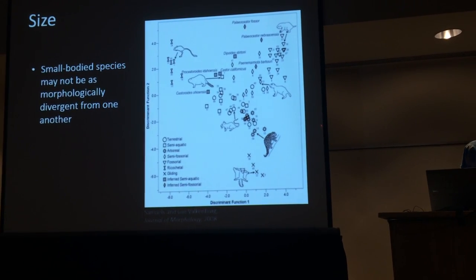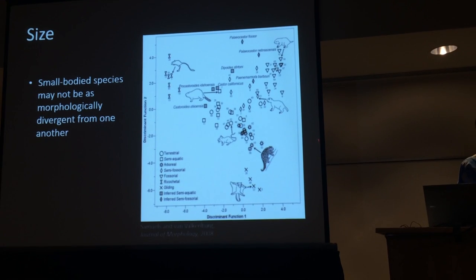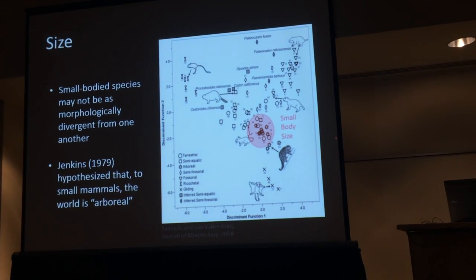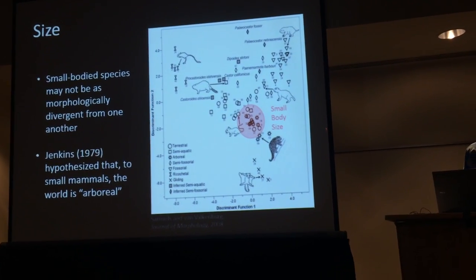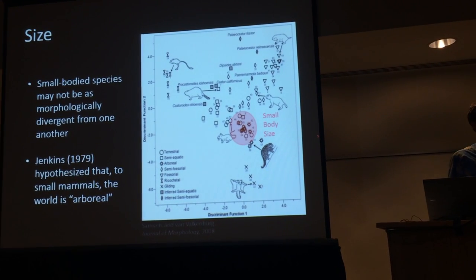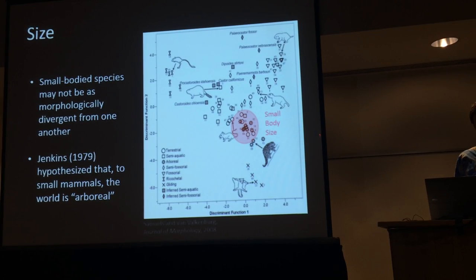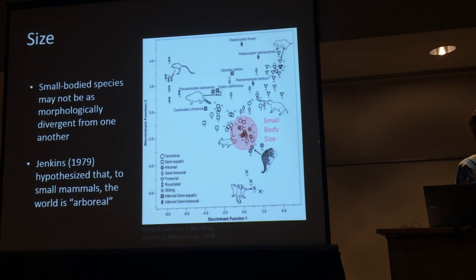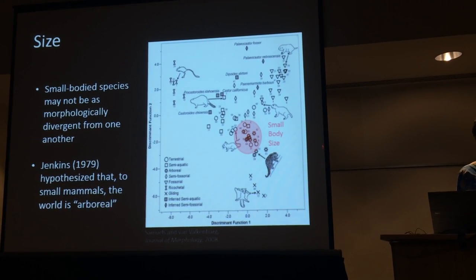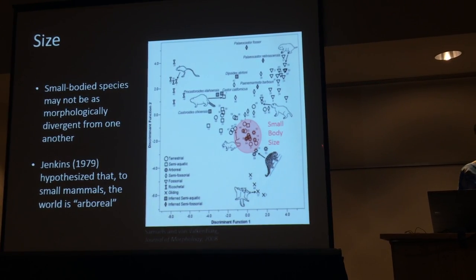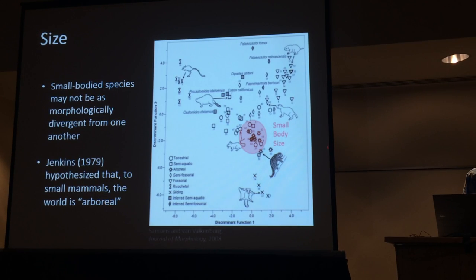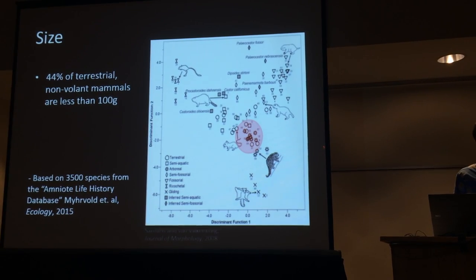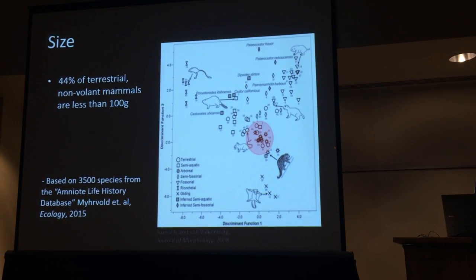So in a discriminant function analysis of rodent morphology done by Sam Voss and Valkenburg in 2008, there's a lot of overlap between terrestrial and arboreal species, and some semi-aquatic species as well. If you dig into their data, all of these overlapping species are the smallest ones in the entire analysis. Farish Jenkins, a paleontologist, hypothesized that to a small mammal, the world really is kind of an arboreal place — you have to climb and move through this matrix, so it's really not that different from being on the ground or up in a tree. It's a compelling hypothesis, and something we have to think about, because 44% of small non-volant mammals are less than 100 grams.